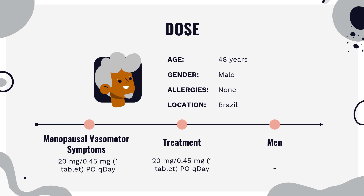Dosing — Menopausal vasomotor symptoms: Indicated for vasomotor symptoms associated with menopause. Dose: 20 mg per 0.45 mg, 1 tablet, PO once daily. Osteoporosis: Indicated for prevention of postmenopausal osteoporosis in non-hysterectomized women. When prescribing solely for prevention of postmenopausal osteoporosis, therapy should only be considered for women at significant risk and non-estrogen medication should be carefully considered. Dose: 20 mg per 0.45 mg, 1 tablet, PO once daily. Take supplemental calcium and/or vitamin D if daily intake is inadequate.